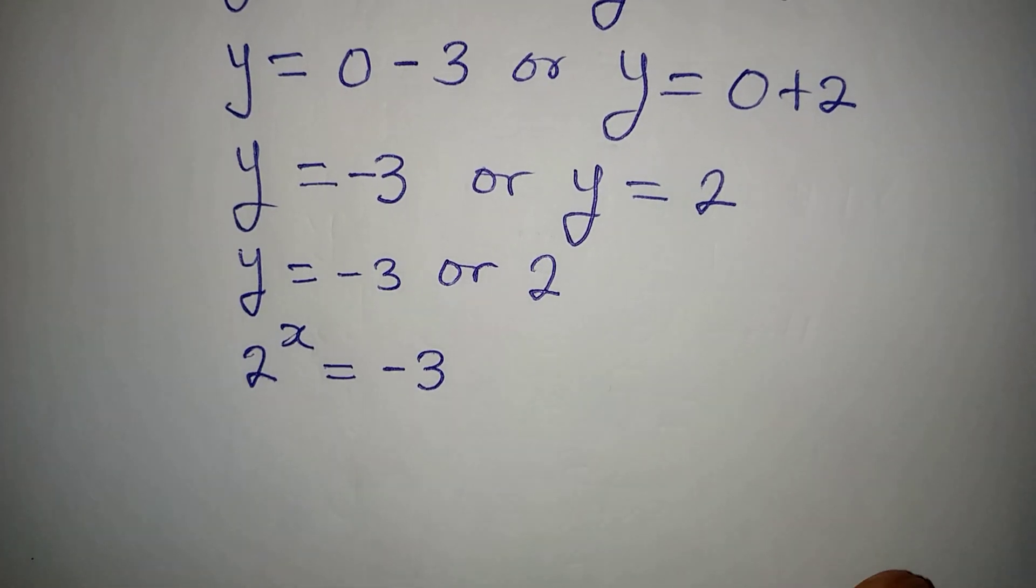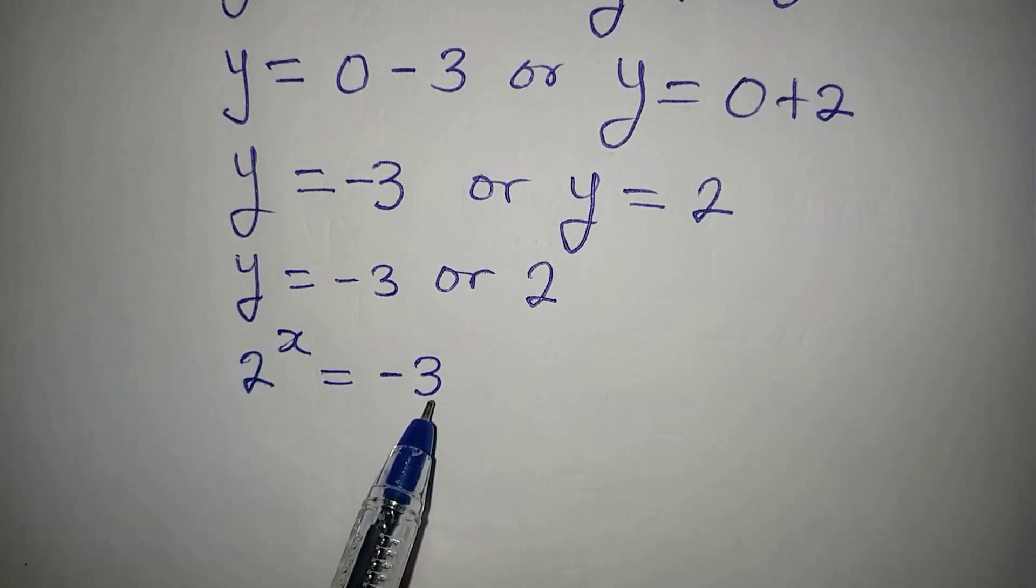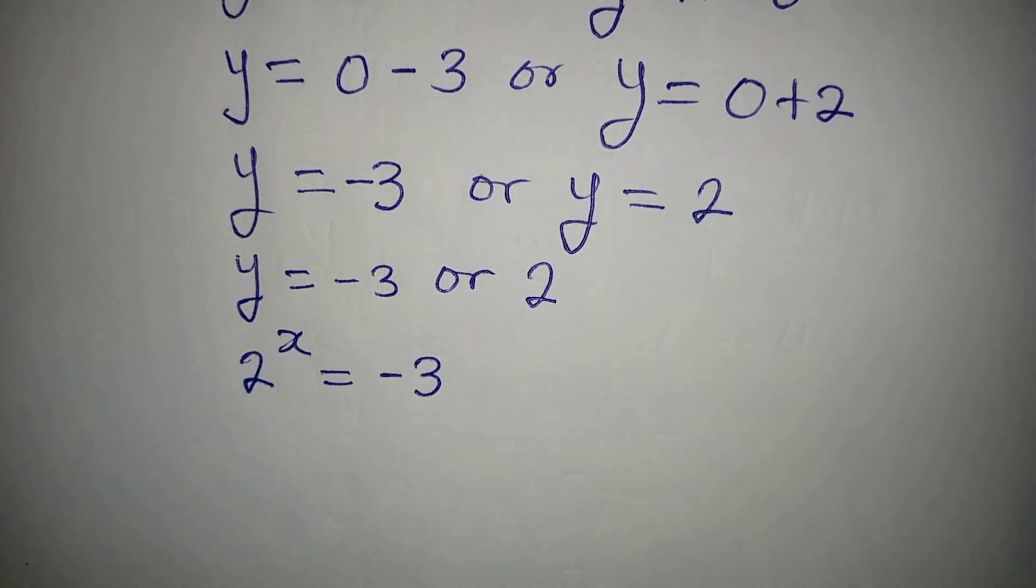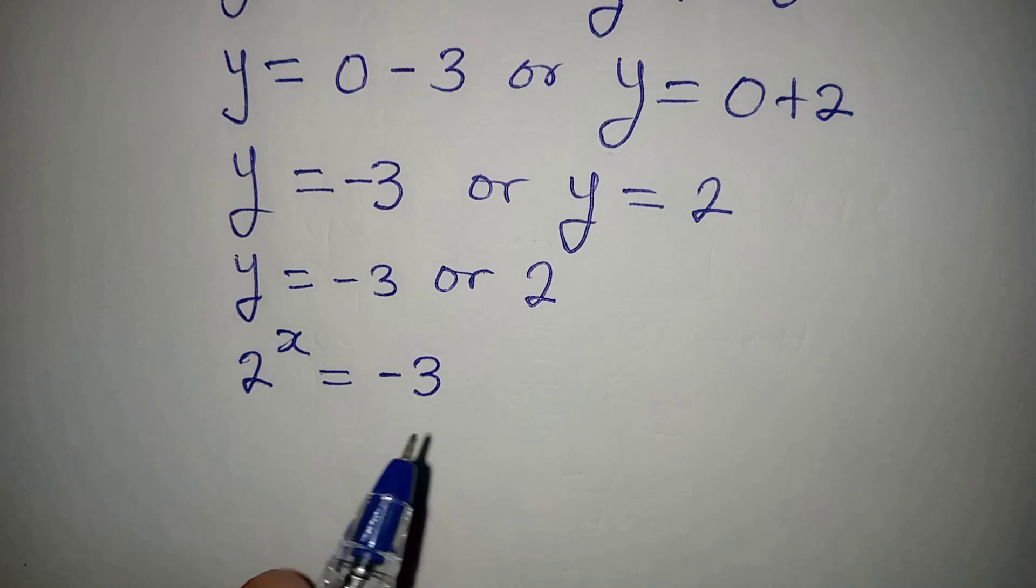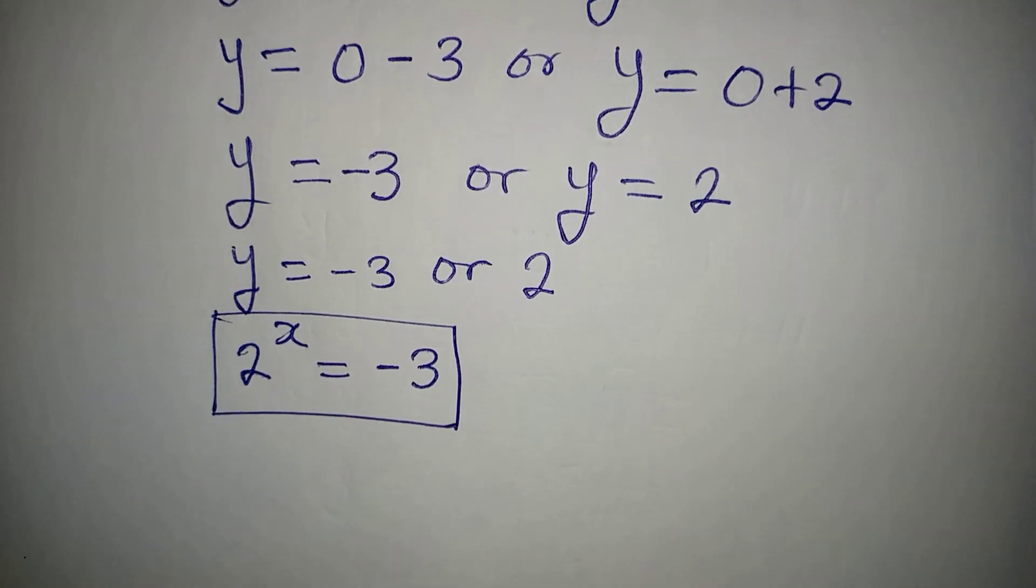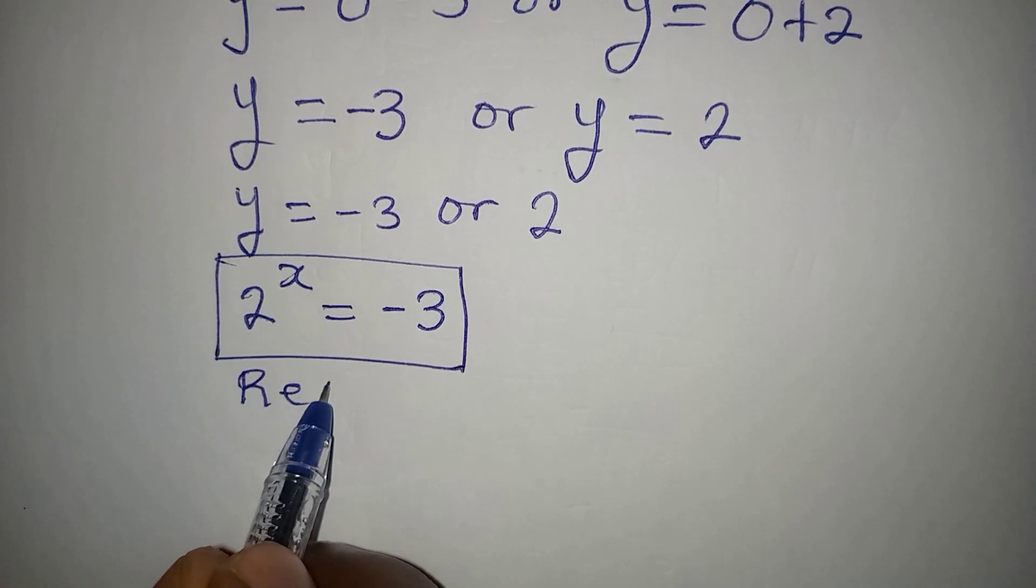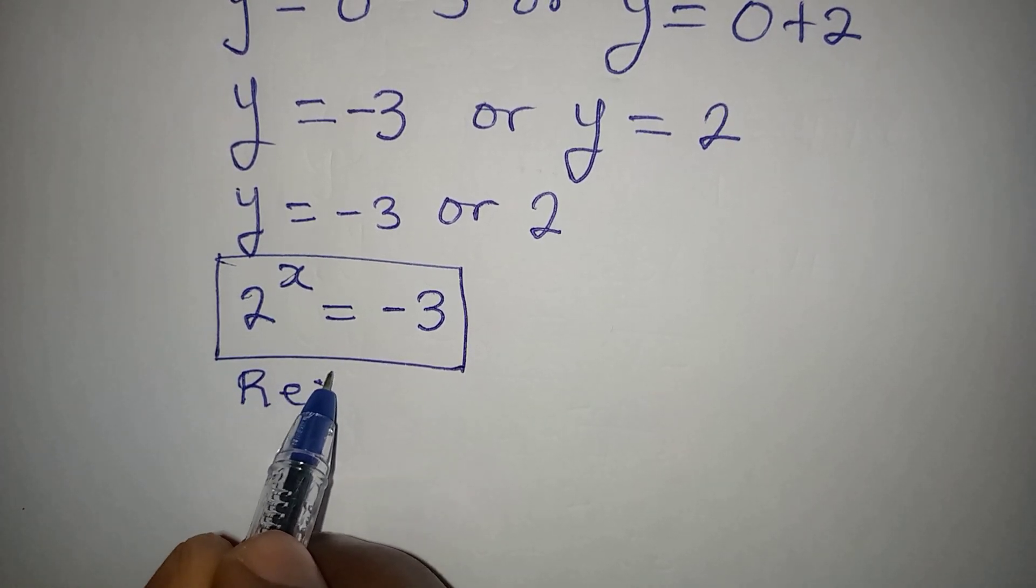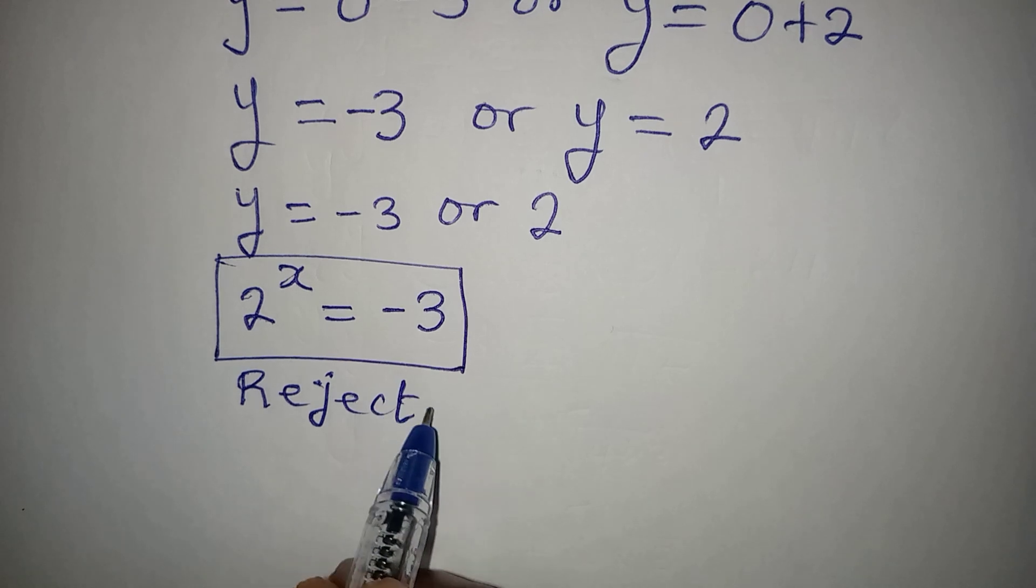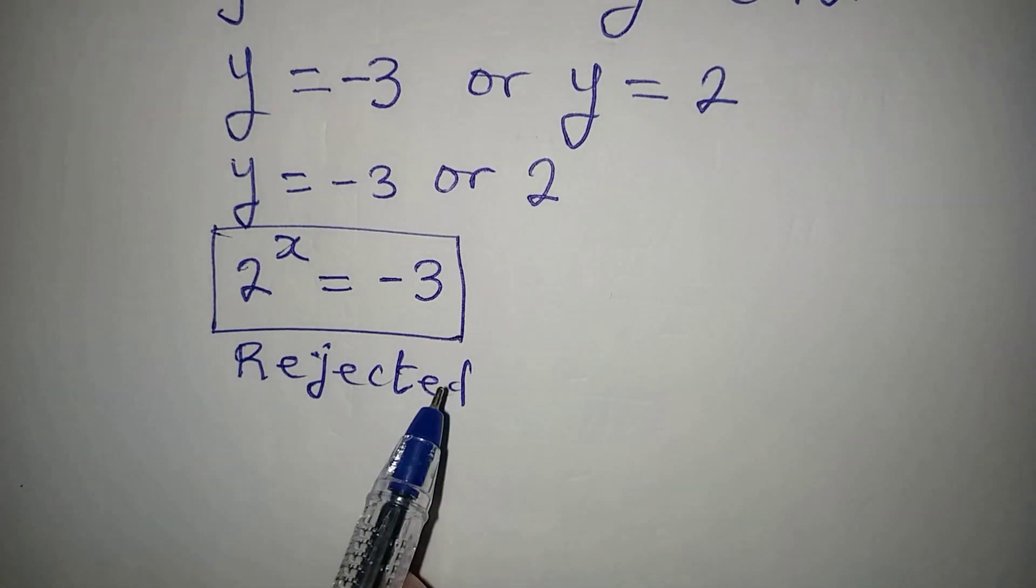But then, what can you do? I mean, what value of x will give you negative 3? There is no value of x that will give you negative 3. So this means that this value here will be rejected. So the value will be rejected. So this is rejected.